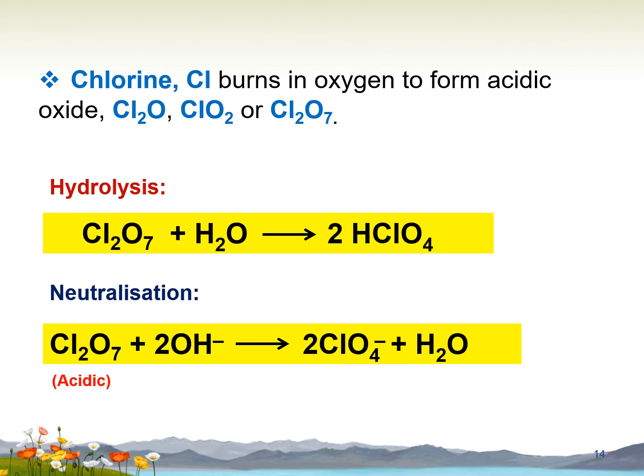Chlorine burns in oxygen to form three types of oxide. The first is Cl₂O, dichlorine monoxide. The second is ClO₂, chlorine dioxide. And lastly, Cl₂O₇, dichlorine heptoxide. The hydrolysis of dichlorine heptoxide Cl₂O₇ with water produces perchloric acid HClO₄, while the neutralization of dichlorine heptoxide with OH⁻ produces perchlorate ion ClO₄⁻ and water.